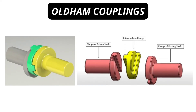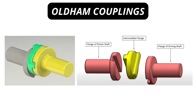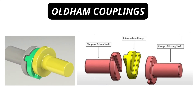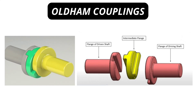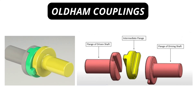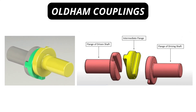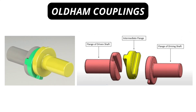Oldham couplings are three-piece flexible shaft couplings used to connect driving and driven shafts in mechanical power transmission assemblies. They are designed for parallel shafts slightly out of line, consisting of a disc on the end of each shaft and an intermediate disc having two mutually perpendicular feathers on opposite sides that engage slots in the respective shaft discs.